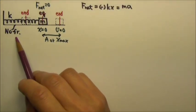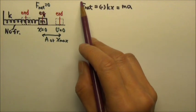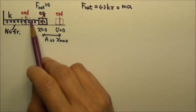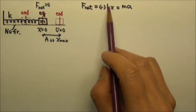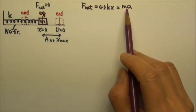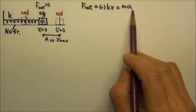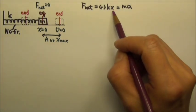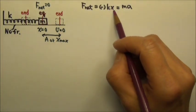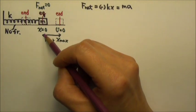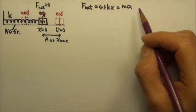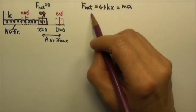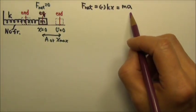Because there is no friction, the net force on the mass during oscillation is the spring's force, and net force equals ma. So if we need to relate x, the distance to the equilibrium position, and the acceleration, we can use this force equation.